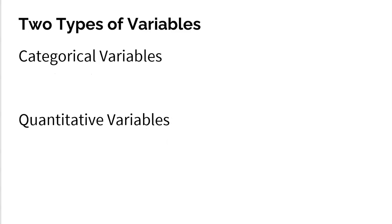Now, there's only two different types of variables in the entire world, which makes it really easy to remember. Categorical variables and quantitative variables.